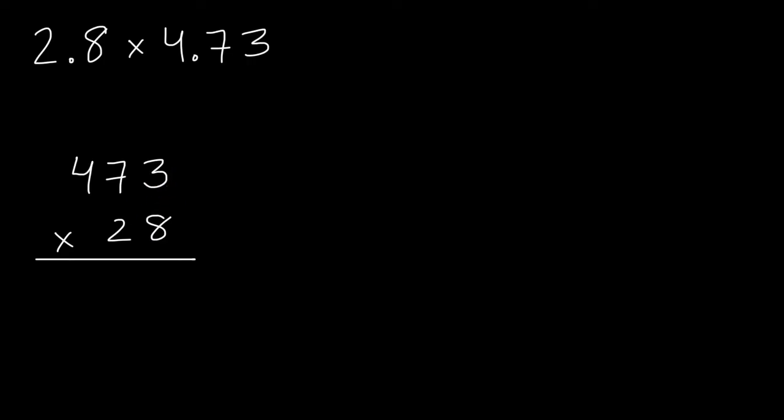And so we could think about, let's multiply everything times the eight. So three times eight is 24. Seven times eight is 56, plus two is 58. And then four times eight is 32, plus five is 37.